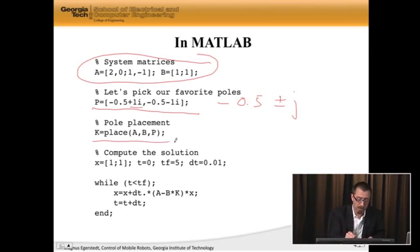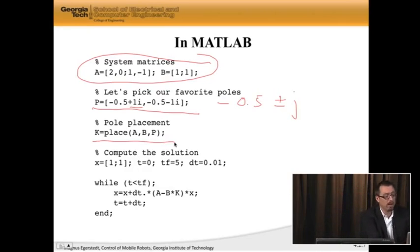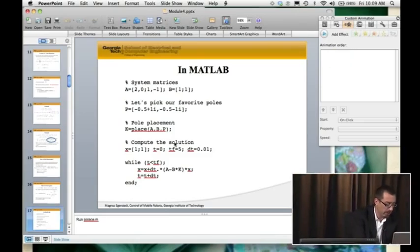I've picked some poles: a complex conjugate pair minus 0.5 ± j, which you write as 1i in MATLAB. Then I run pole placement: K = place(A, B, P).